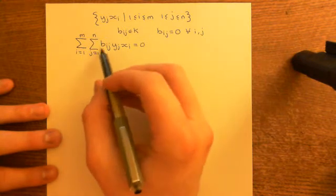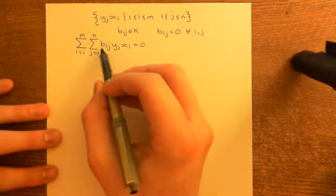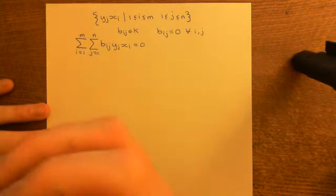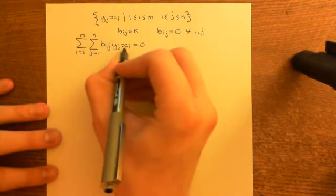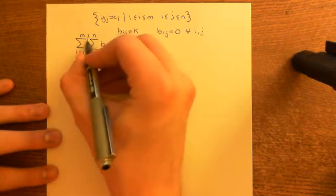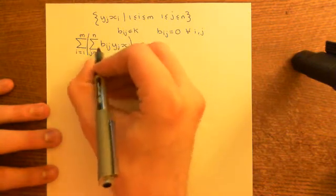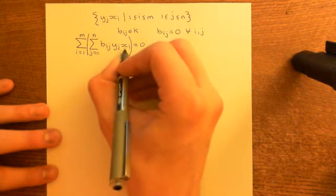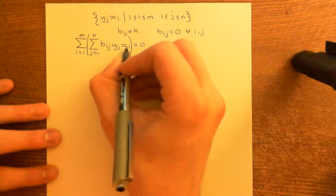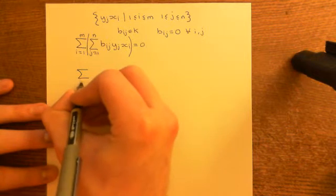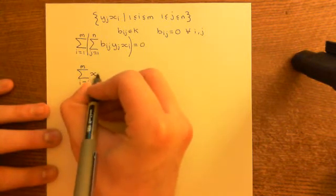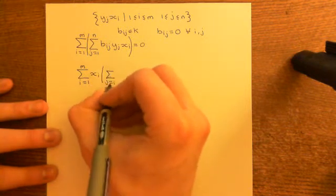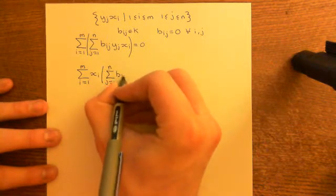So let's assume that we have a solution to this equation — some bᵢⱼs which satisfy this — and we now want to prove that all of the bᵢⱼs are equal to zero. Basically, we're going to do the exact reverse steps of what we did to show that it spans. First, we're going to undistribute — reverse distributivity. If we think about the second summation, it doesn't involve i at all. xᵢ is a constant, so we can pull it out. That gives us the sum from i = 1 to n of xᵢ times the sum from j = 1 to n of bᵢⱼ yⱼ.